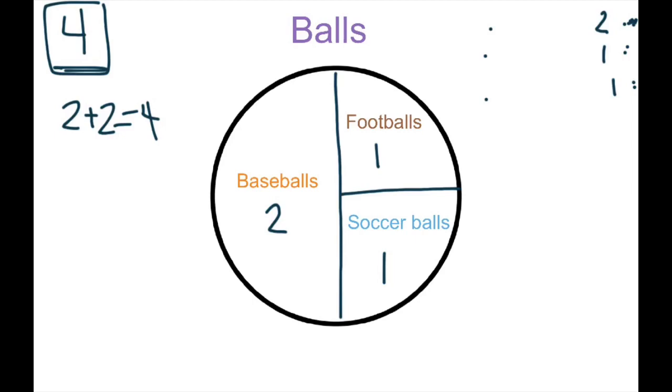So, you can see that this piece for the footballs is a fourth, and the soccer balls is a fourth, but the baseballs is a half. And if you drew a pretend line, I'm just going to use a dotted line, you could see that we split it into four pieces, but the baseballs has two whole pieces in one. So, that shows that there's twice as many baseballs as footballs, and twice as many baseballs as soccer balls.